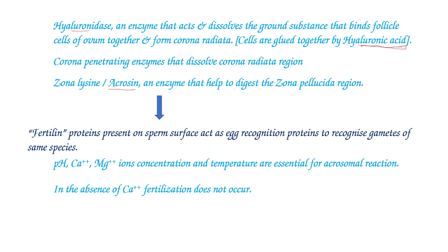The next chemical substance is acrosin, also called zona lysine, an enzyme that helps digest the zona pellucida region — the area around the plasma membrane of the secondary oocyte. Zona pellucida is secreted by the cells of the corona radiata as well as the secondary oocyte and is made up of glycoproteins. This zona pellucida is digested by the enzyme acrosin or zona lysine; remember, lysis means breakdown.